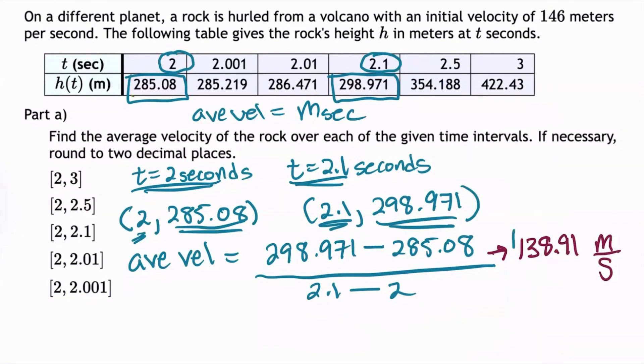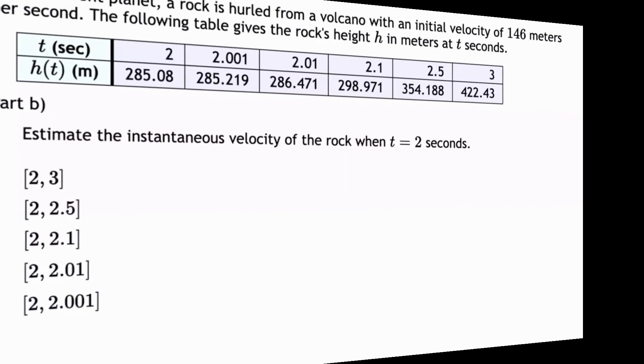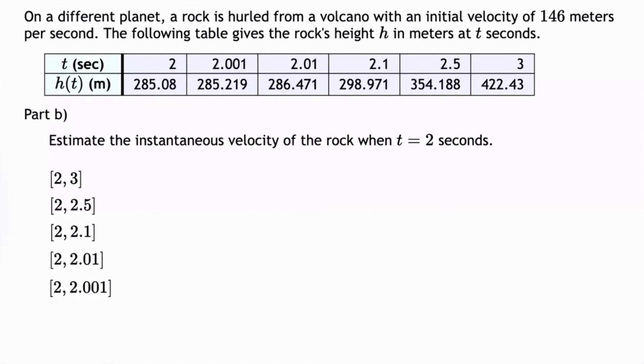However, we only need to enter the numerical value of 138.91. Okay, let's take a look at part B of this problem. So in part B, we're asked to estimate the instantaneous velocity of the rock when t equals 2 seconds.